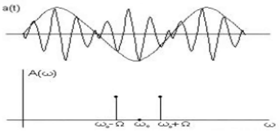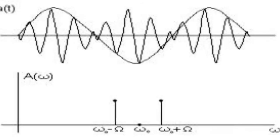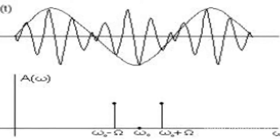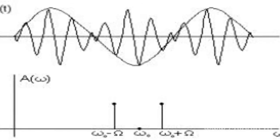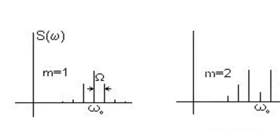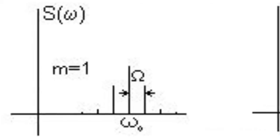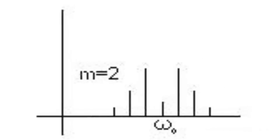Thus the frequency band occupied by the signal is narrowed approximately twice, which allows placing in the same range of frequencies double the number of communication channels.